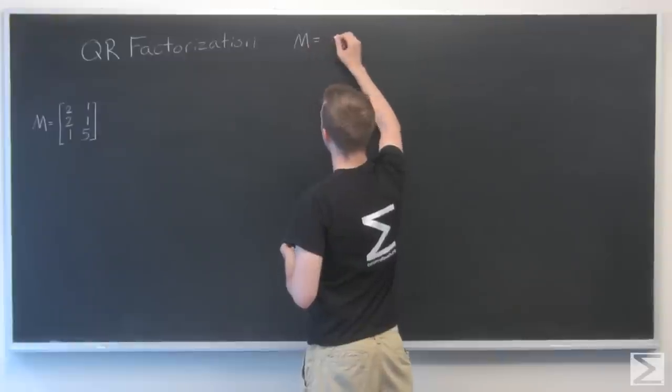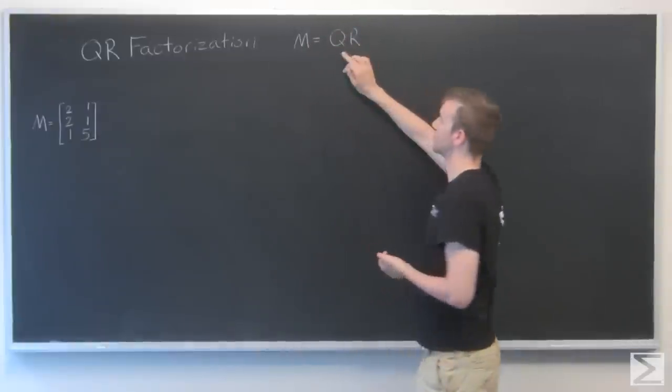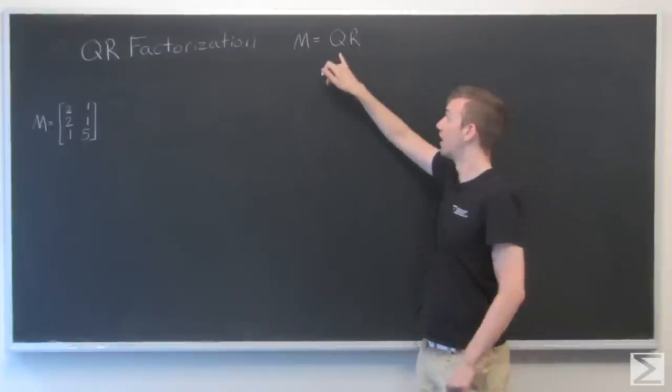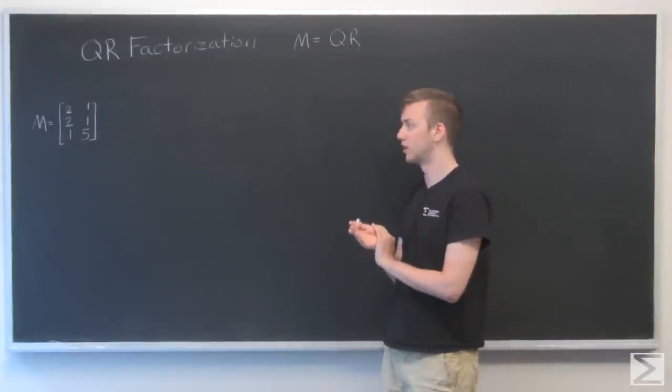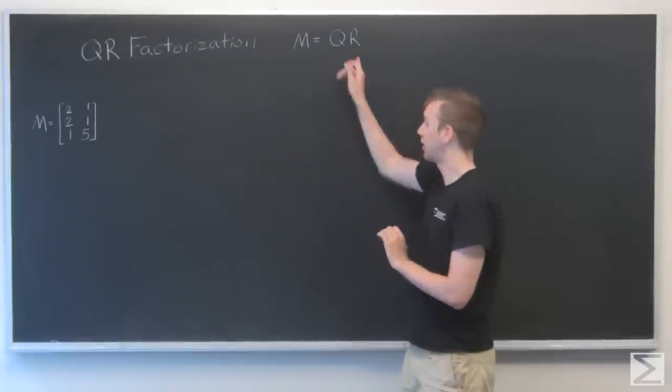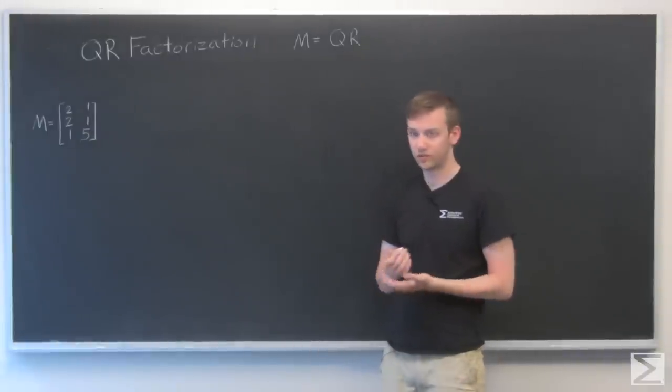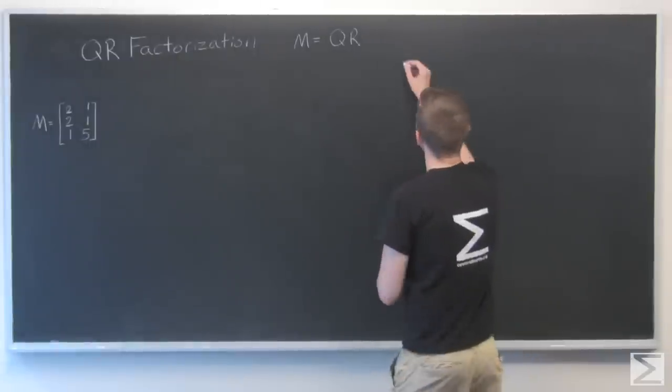So we take M and we want to turn it into two matrices, Q and R. The Q is going to be the columns are going to be the orthonormal basis of the column vectors in our original M, and the R is going to be an upper triangular matrix.